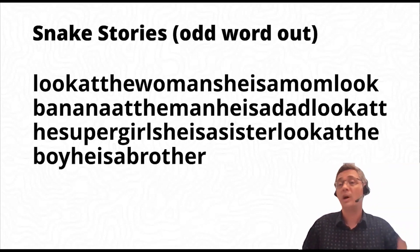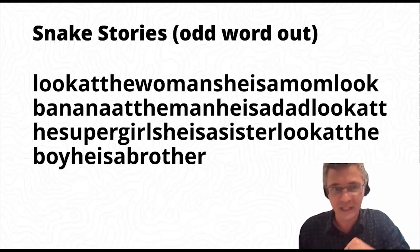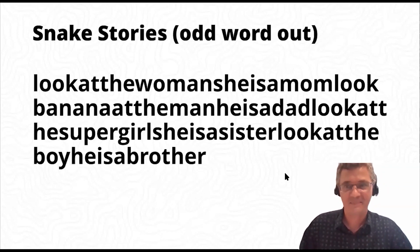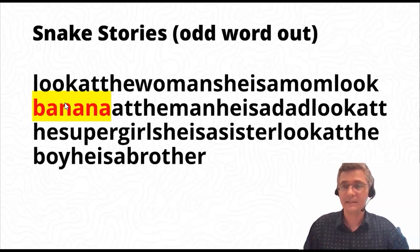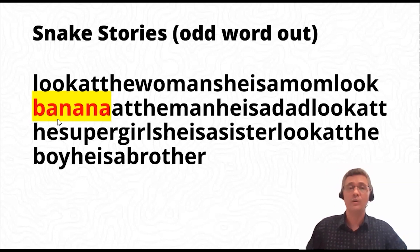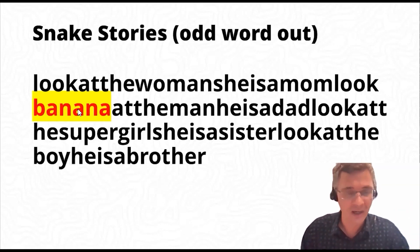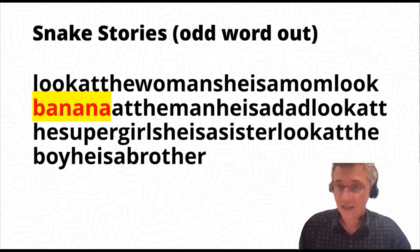A variation I like is called 'odd word out.' Hidden in the text are two words that should not be there. The first wrong word is 'banana' — it's completely out of context, and grammatically we need an article before it, which we don't have. So banana is clearly wrong. The second odd word out is 'super.' It's not grammatically wrong — we can say 'look at the super girl' — but the problem is it doesn't fit the structure of the text. None of the other people mentioned have an adjective, so 'super' doesn't belong here.